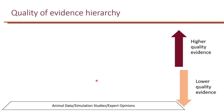Let's review the quality of evidence pyramid. At the bottom of the pyramid, we can see the lowest quality of evidence — these are data from animal data, simulation studies, and expert opinion. Sometimes, in the absence of higher quality evidence, these studies can actually be useful.